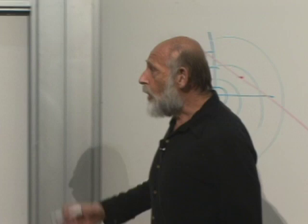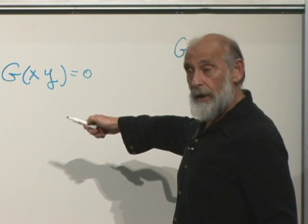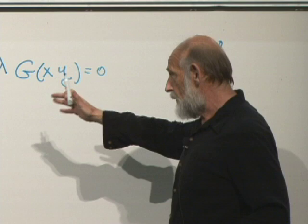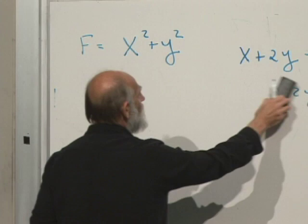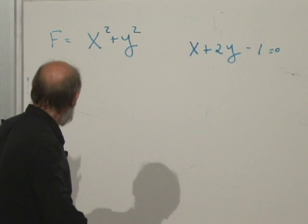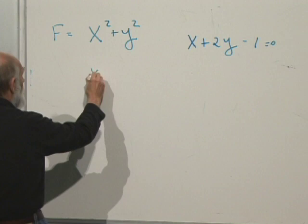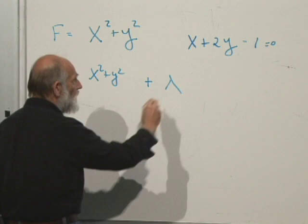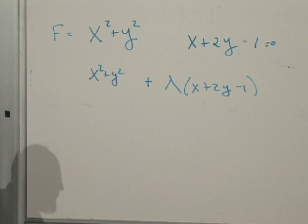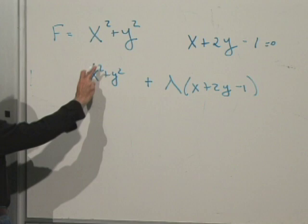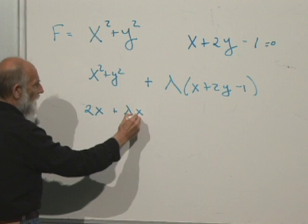You could imagine having more variables x, y, z, w and having several constraints. But let's first do the problem as a function of two variables for one constraint. So let's solve: minimize x squared plus y squared, subject to the constraint x plus 2y minus 1 equals zero. We add x squared plus y squared plus lambda times (x plus 2y minus 1). Now we minimize it by differentiating.